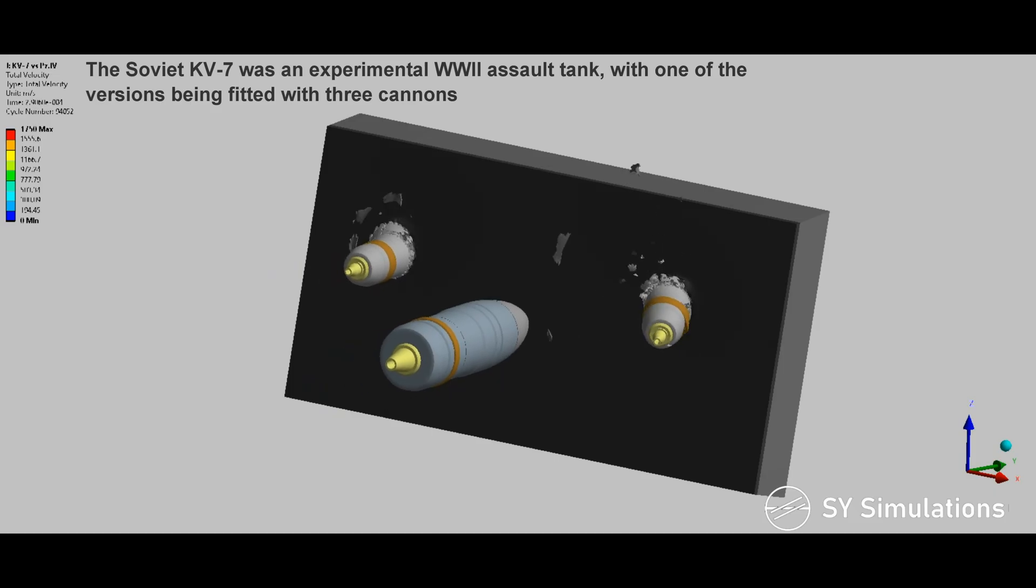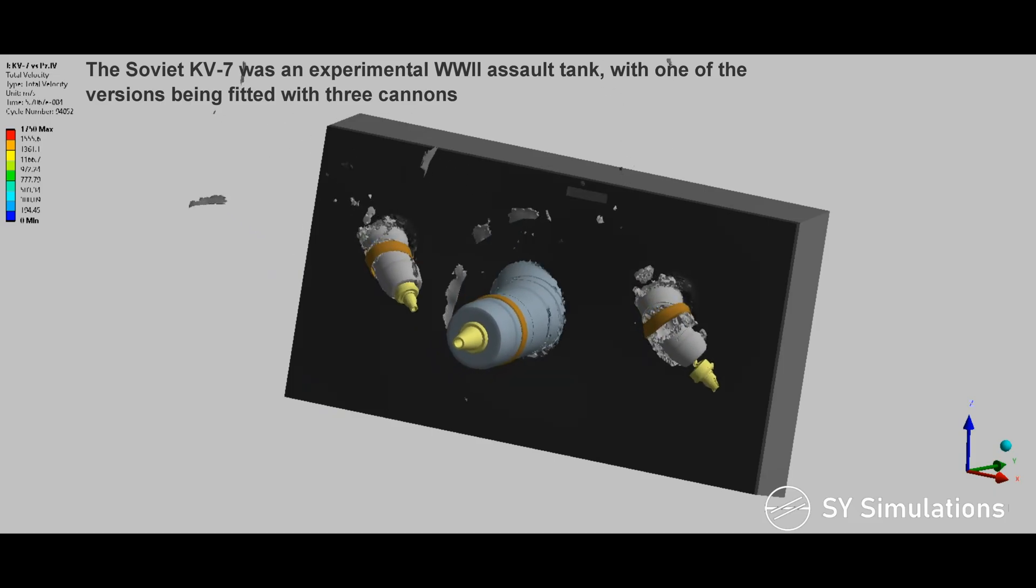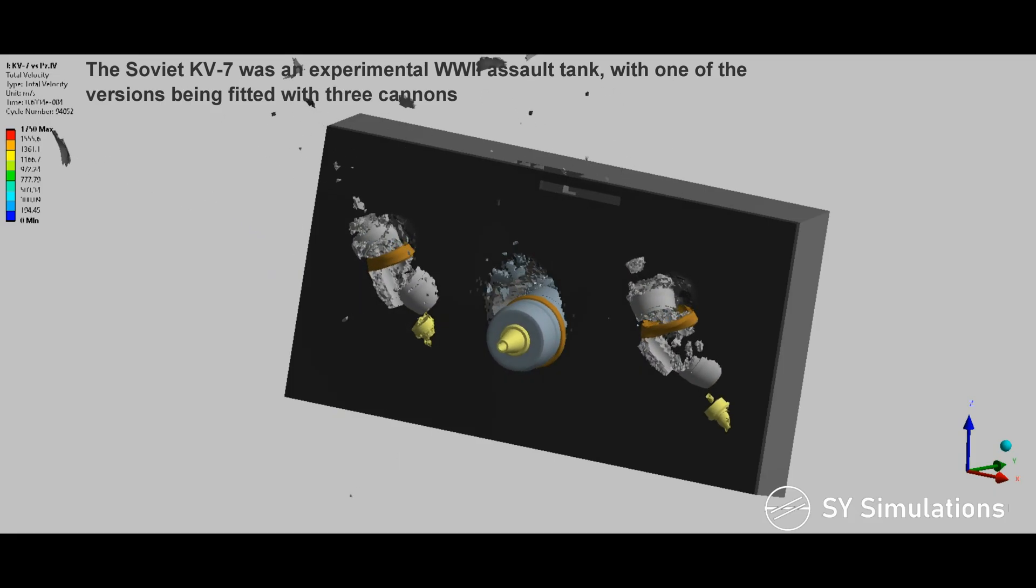The Soviet KV-7 was an experimental World War II assault tank with one of the versions being fitted with three cannons.